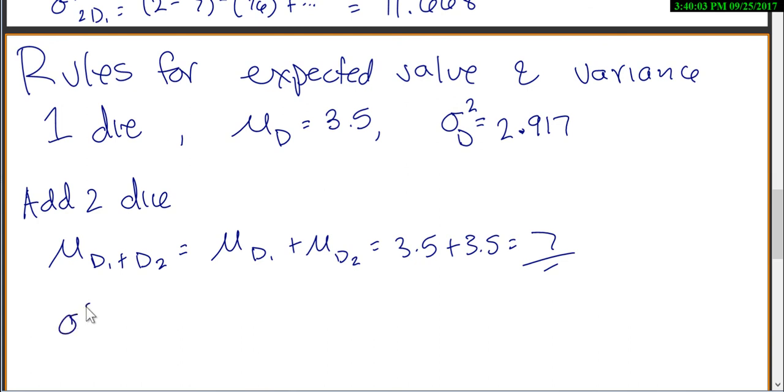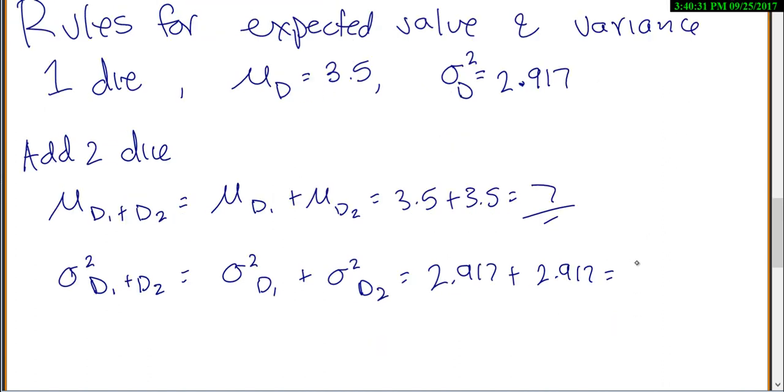The variance, if you're adding two things as long as they're independent and rolling two dice should be independent and they shouldn't affect each other, is you just add each of the variances. So add each of the variances. 2.917 plus 2.917 gives me 5.834. So again, just what we found up above.